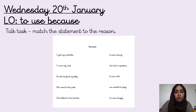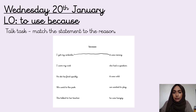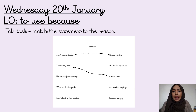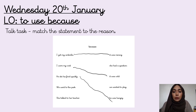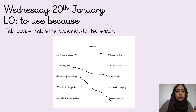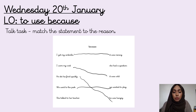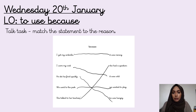Let's go through some answers. 'I got my umbrella because it was raining.' 'I wore my coat because it was cold.' 'He ate his food quickly because he was hungry.' 'We went to the park because we wanted to play.' 'She talked to her teacher because she had a question.' Those are the answers — check that you have them, and if you haven't, go back and have a look at where you might have gone wrong.